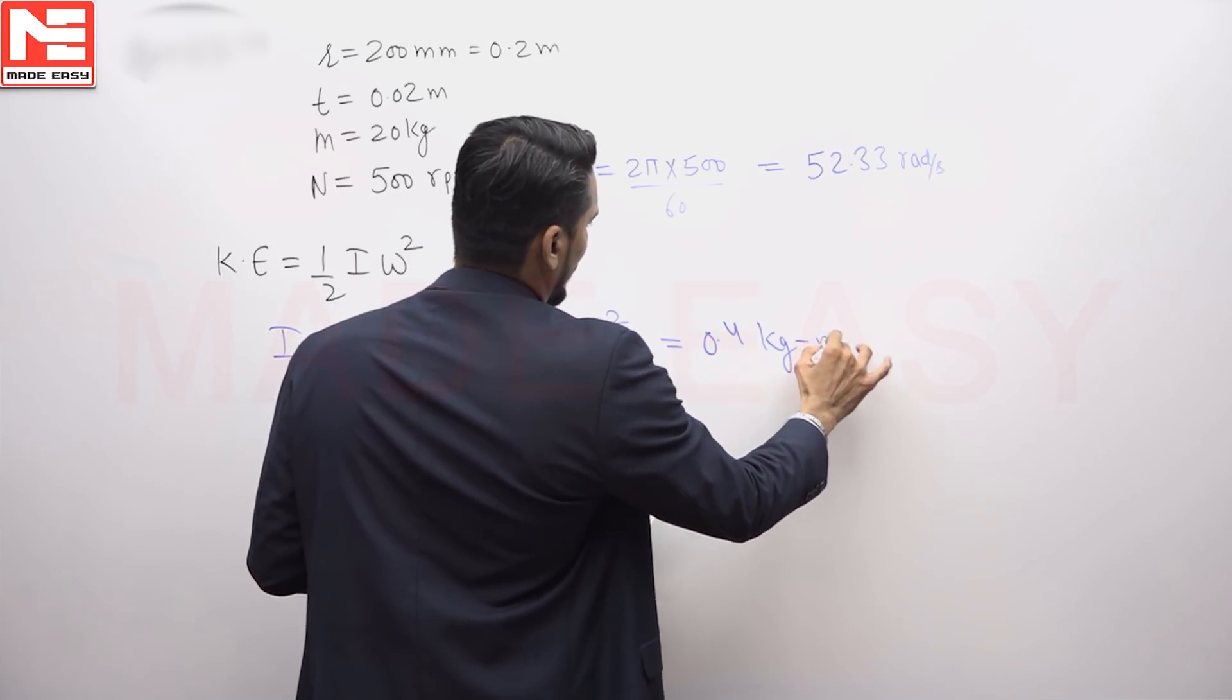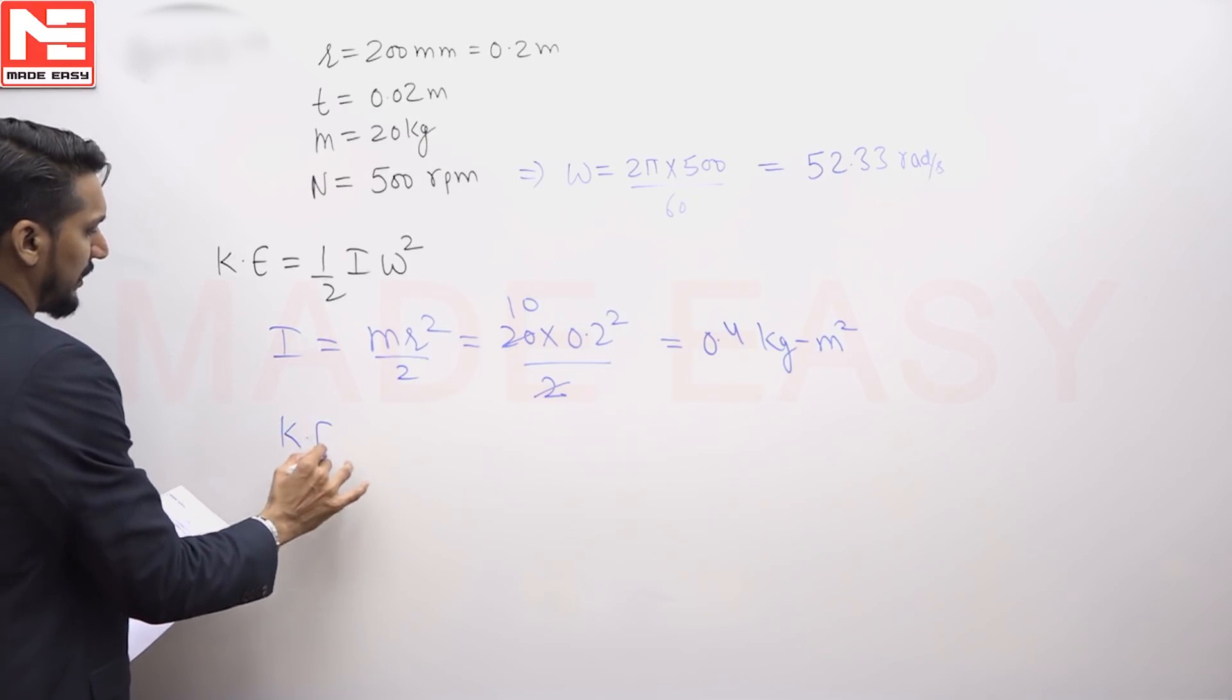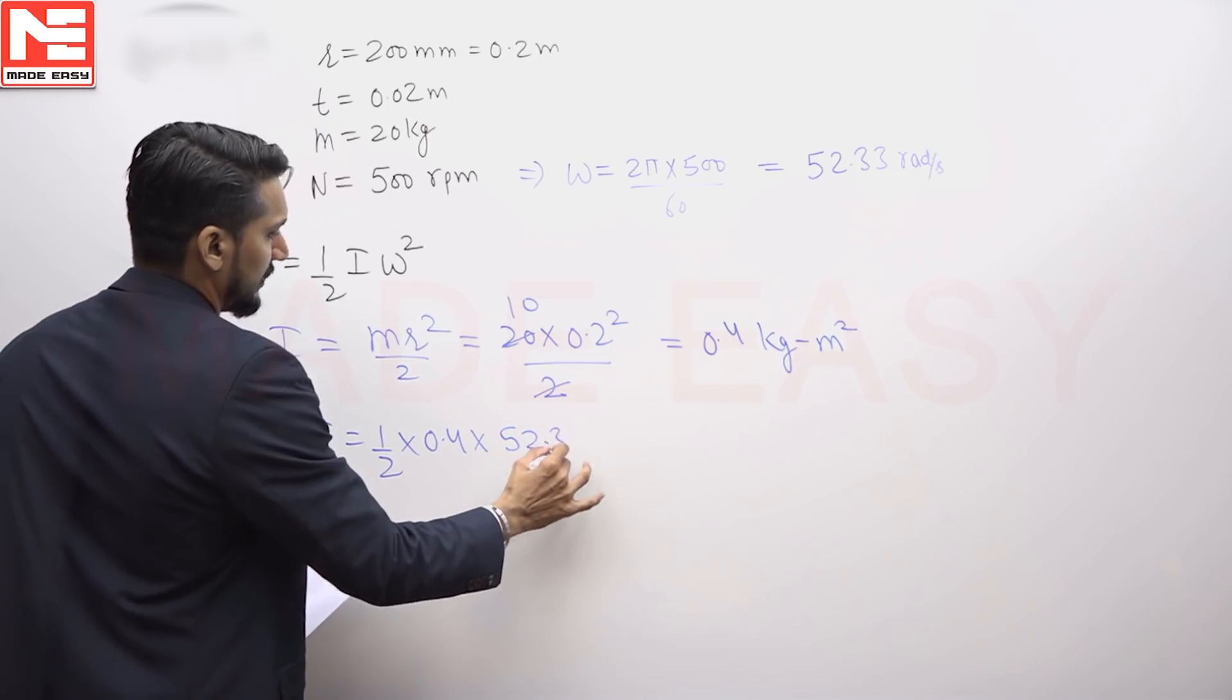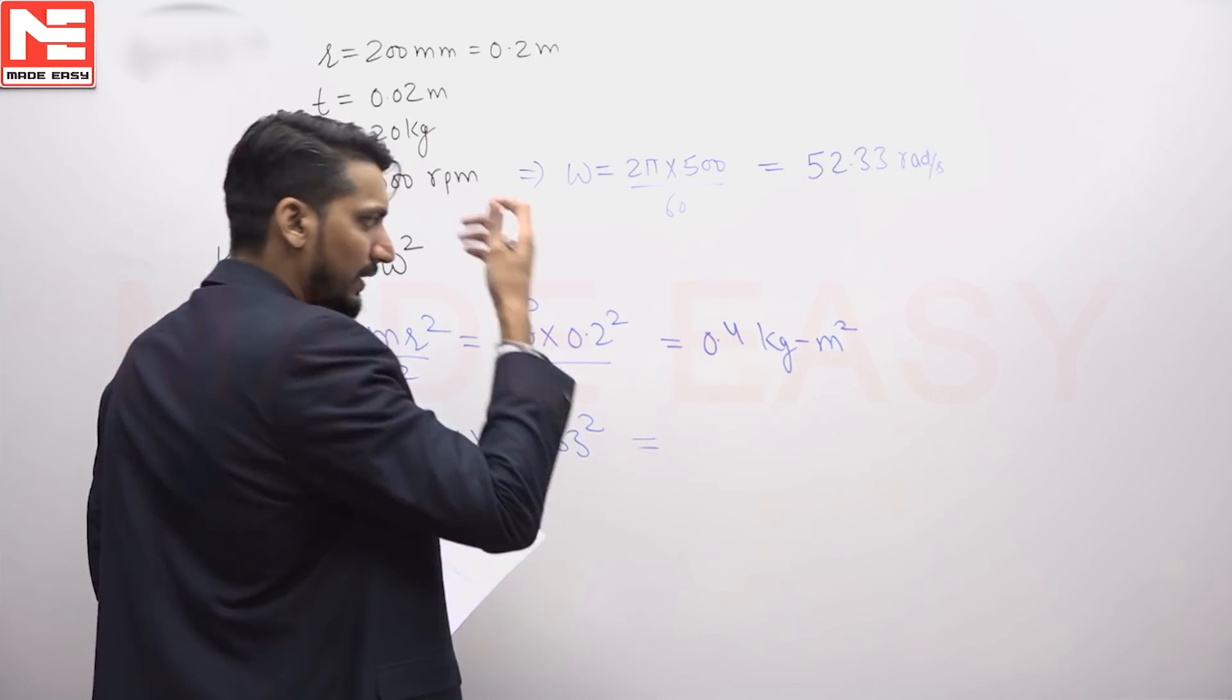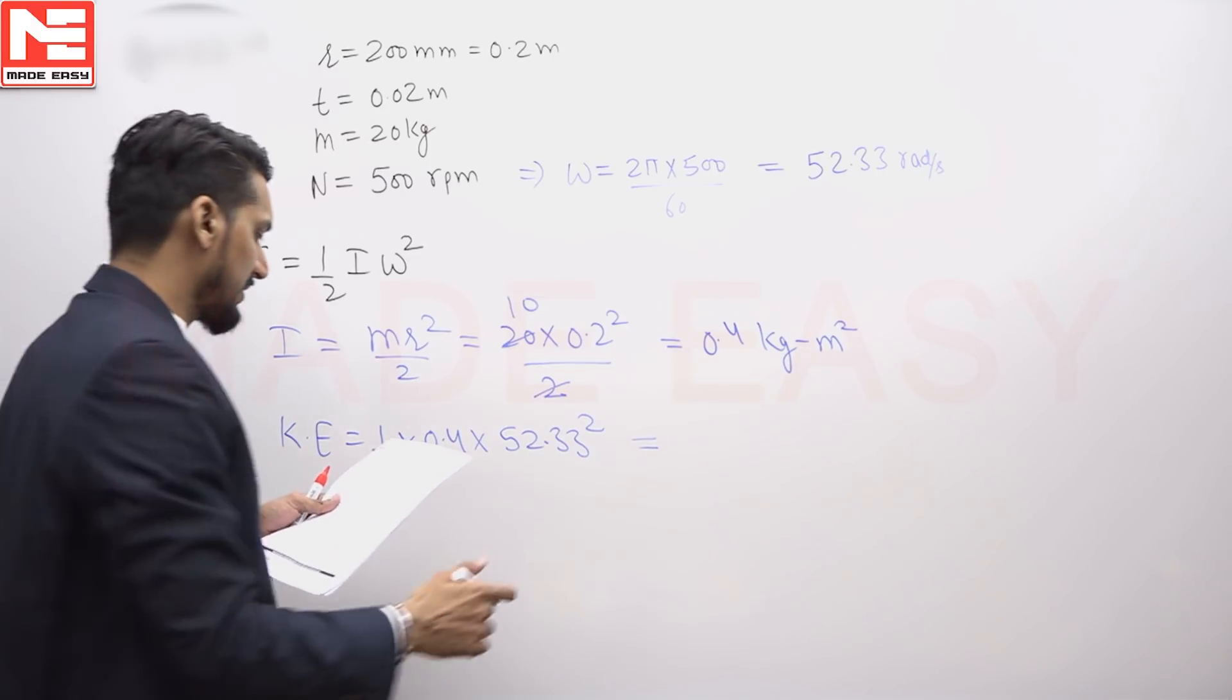For kinetic energy, put these values: KE = 1/2 × 0.4 × 52.33². Since every quantity is in SI units, the kinetic energy will be in joules: 547.68 joules. Some students may have a doubt about why thickness is given.